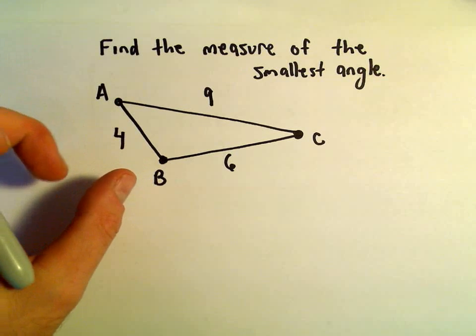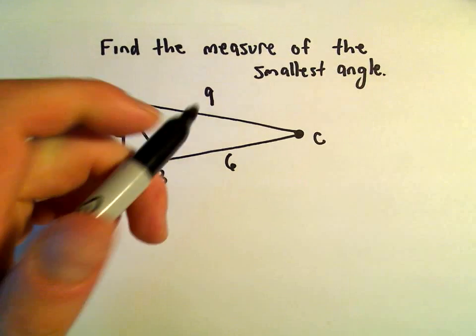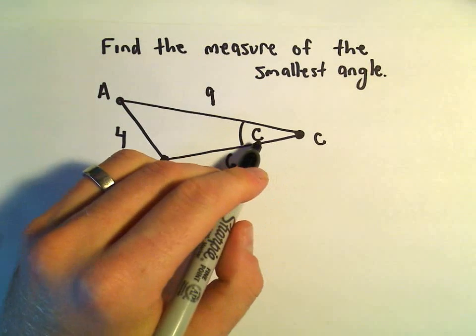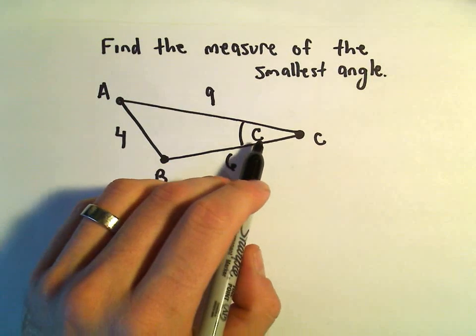The side with shortest length is side AB, which has length 4. So that means we're trying to figure out the measure of angle C.